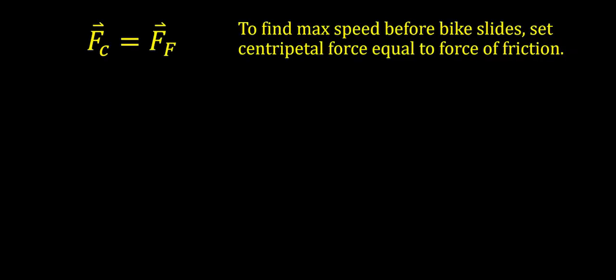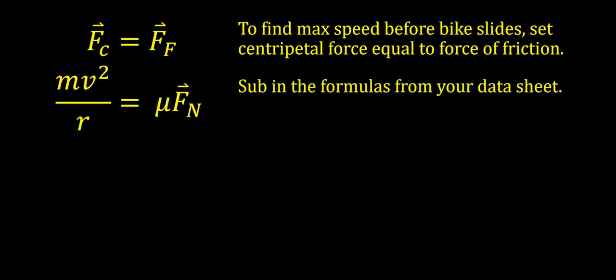We can start by writing FC equals FF. This is to find the maximum speed the bike will move at before it slides and overcomes the force of friction. We can go to our formula sheet and replace centripetal force with MV squared over R, and force of friction with mu times the normal force.